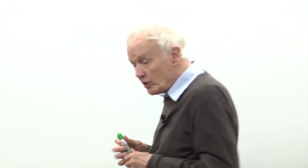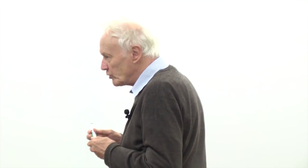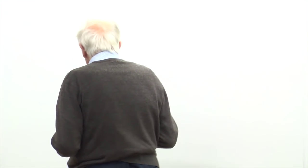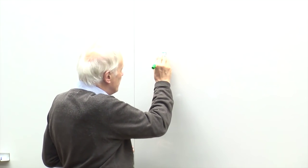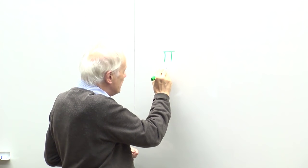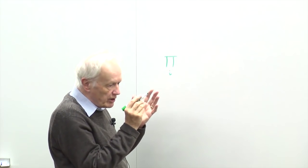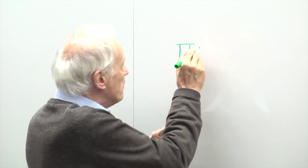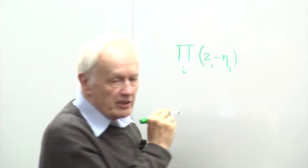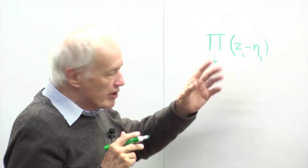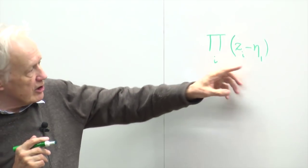Consider two quasi-particles in the ν = 1/3 quantum Hall effect. You get a single hole at position η₁ by multiplying your original wave function by an extra factor, giving a reduction of charge density near η₁. If we want to create two holes, we add a product over pairs, giving factors (z_j − z_k). The wave function must be symmetric under interchange of η₁ and η₂, and anti-symmetric with respect to exchange of any two electrons, since they're plain fermions.